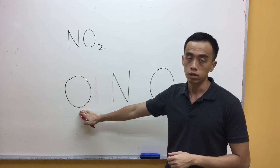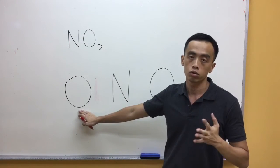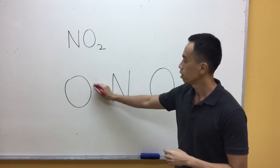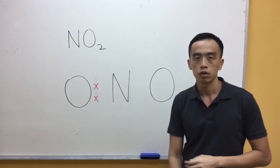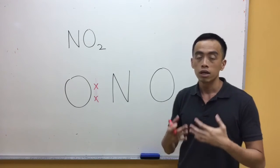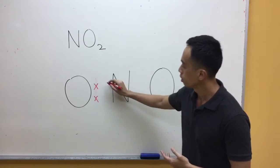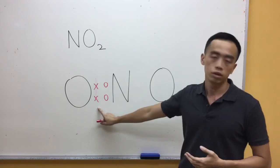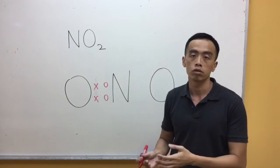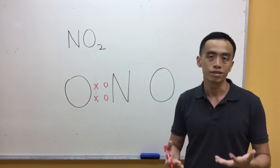Let's look at this oxygen. This oxygen requires two additional electrons to complete its octet. So what we do is share two electrons with the central atom and ask nitrogen to share two electrons back. This will be a double bond, and oxygen will get two electrons from nitrogen, so oxygen will have a complete octet and be stable.